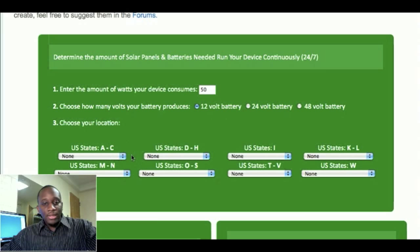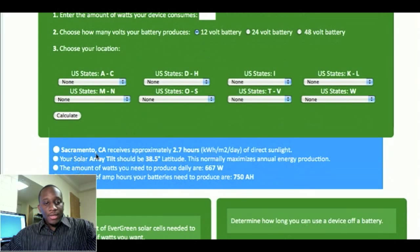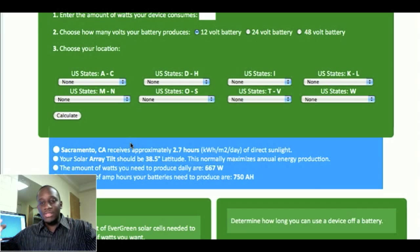After we select our battery, we can select our location which is very critical. And you'll see why in a minute. So click on this Calculate button and below here is the information that you can receive. Sacramento, California receives approximately 2.7 hours of direct sunlight. And your solar array tilt should be 38.5 degrees latitude. And this here, this array tilt just suggests a tilt for your solar array so that you receive the most amount of solar energy for the year. So this value is going to be different for different people depending on the location that you're at. And this 2.7 hours of direct sunlight is going to be different depending on your location.